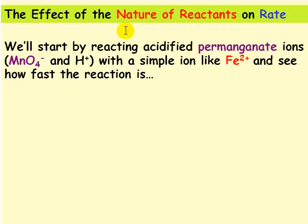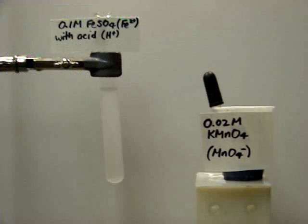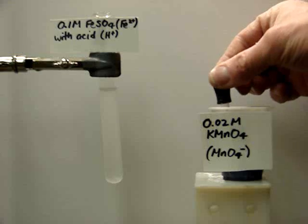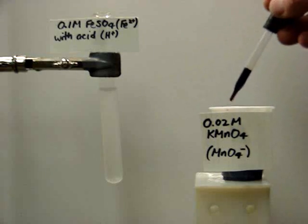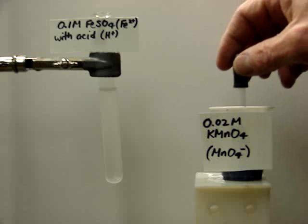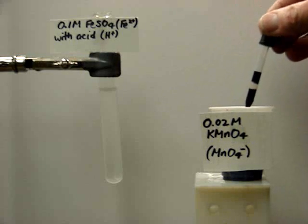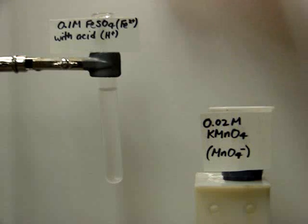Next we're going to look at the effect of the nature of the reactants on rate. We're going to start with some purple solution called acidified permanganate, which is MnO4- with H+. And we're going to react it with a fairly simple ion like Fe2+, and see how fast the reaction is. In this experiment, we're going to put some purple KMnO4 solution into a solution of FeSO4, which is the source of the Fe2+. This solution has been acidified.